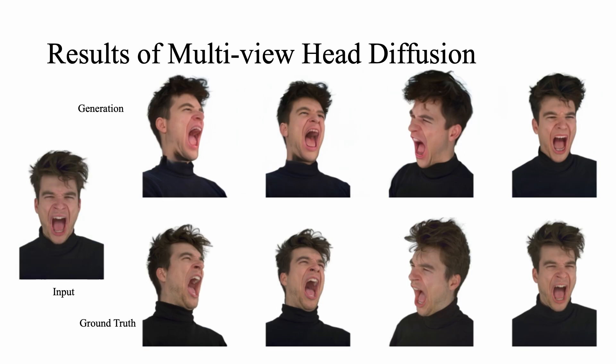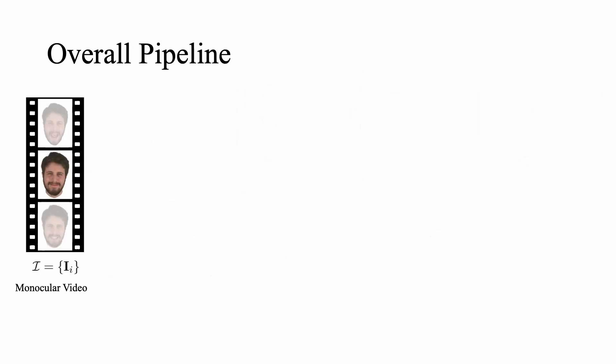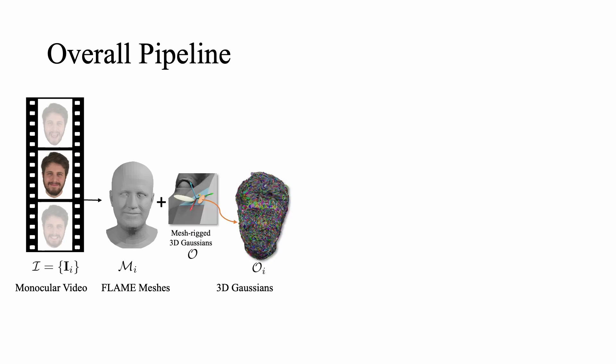We leverage multi-view diffusion priors for Gaussian avatar reconstruction. We use FLAME tracking to obtain coarse head geometry from the monocular video. Then we optimize an animatable Gaussian splatting representation by attaching Gaussians to the triangles of the FLAME mesh.